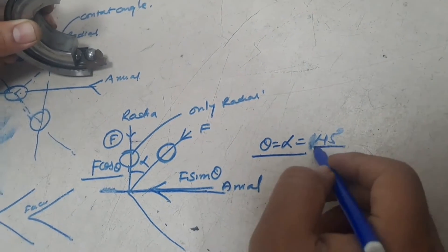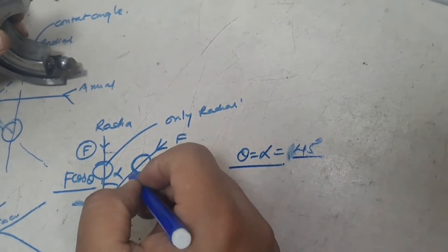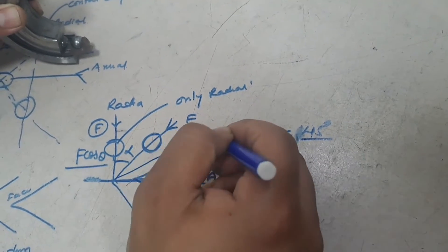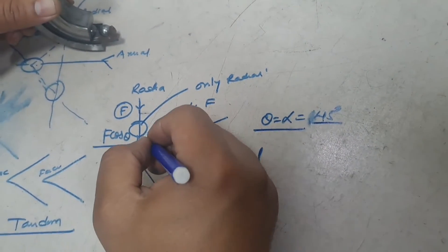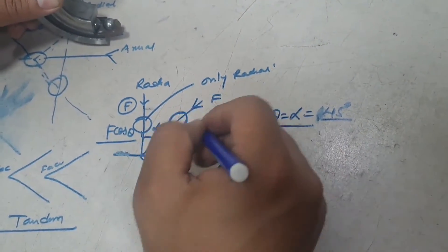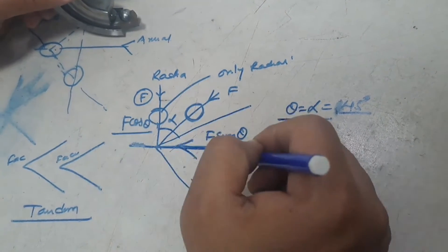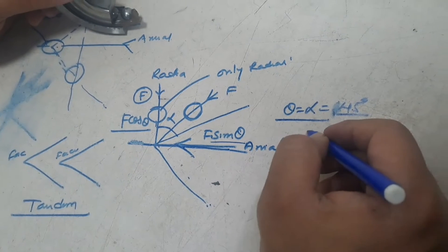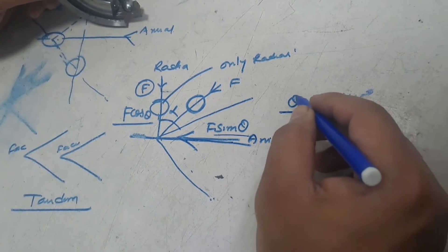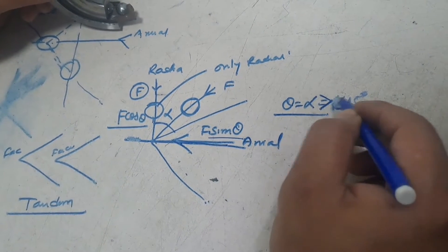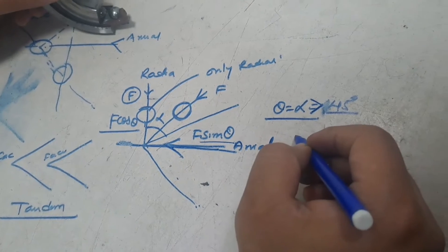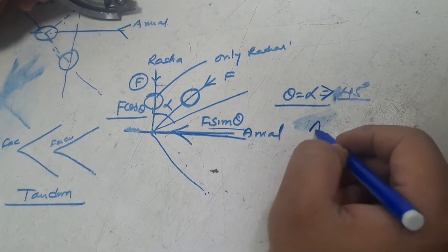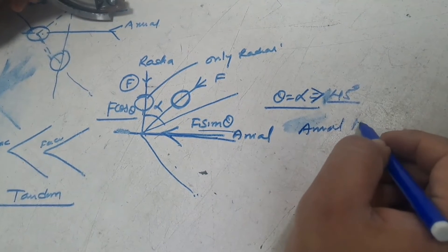If the contact angle is 45 degrees, then the load carrying capacity in the axial and radial directions will be equal, because at θ = 45°, sinθ equals cosθ. As θ increases, the cosine factor decreases and the sine factor increases. In ball screw bearings, the contact angle is normally 60 degrees, meaning the load carrying capacity in the axial direction is higher than in the radial direction.